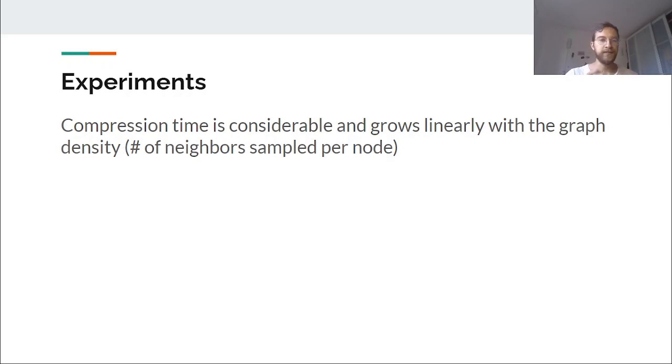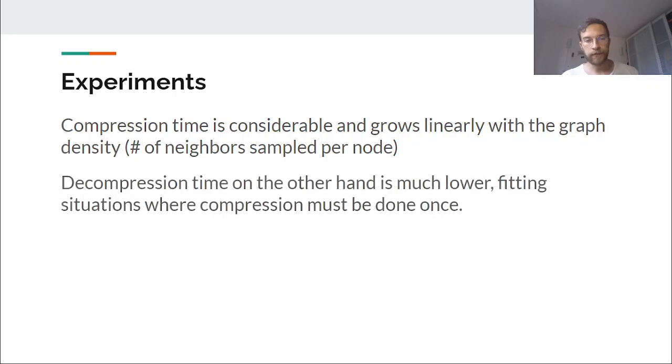But this density parameter will, of course, affect the time and compression time is considerable. It grows linearly with the parameter of graph density and it can really take a lot of time. But the good thing is that the decompression time is much lower and it will fit situations where you have to compress the collection once and then just decompress it multiple times, for example, if you offer a collection to download.